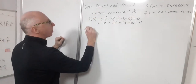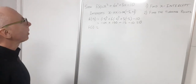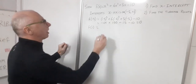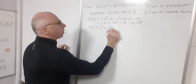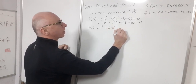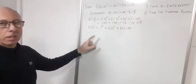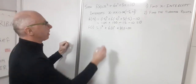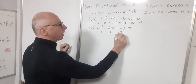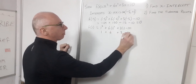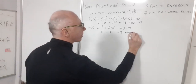Now let's try the other one. f of 1, which is potentially the easier one to calculate. We've got 1 cubed plus 6 times 1 squared plus 3 times 1 minus 10, which is 1 plus 6 plus 3 minus 10. You can quickly see that is also 0.